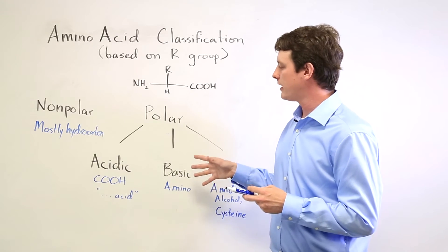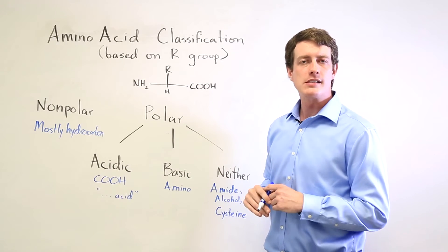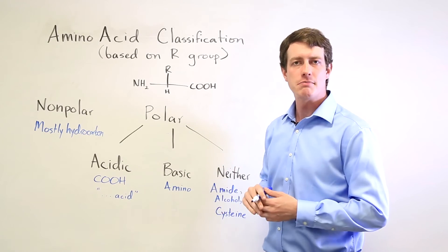The basic ones have an amino group in their side chain, and the amino group is a nitrogen with various hydrogens bound to it.